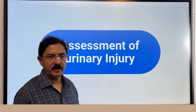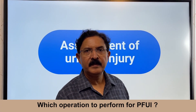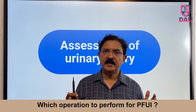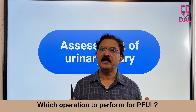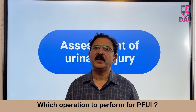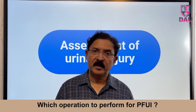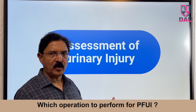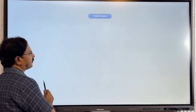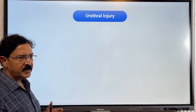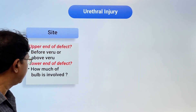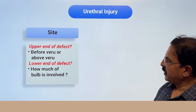How do you decide in clinical practice, by looking at the X-ray pictures, RGU and MCU of the patient, what you will need? That is the main focus of this talk. The first step is assessment of urethral injury — you have to know about the site of urethral injury.